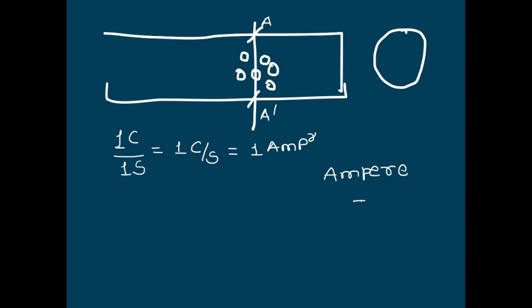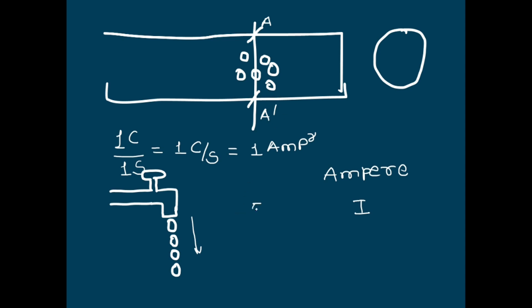To understand current, let's take the example of tap water. The amount of water flowing through a tap depends on the rate at which water particles come out. The higher the rate, the more the water flow. Likewise, the higher the rate at which electrical charge passes through the reference point, the higher the current. If 5 coulombs of charge pass through the reference point in one second, then the current is 5 amperes.